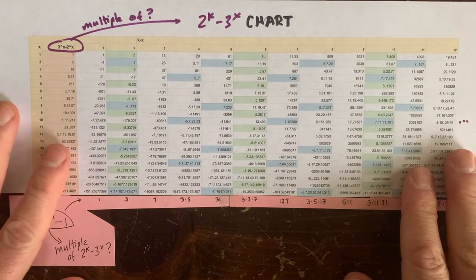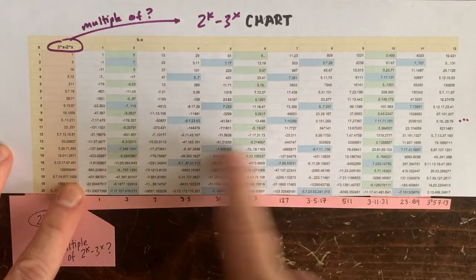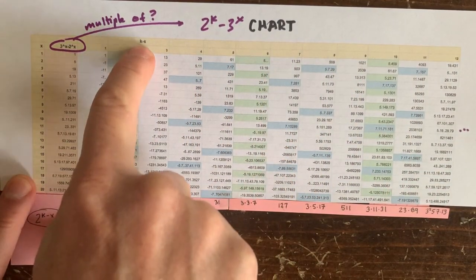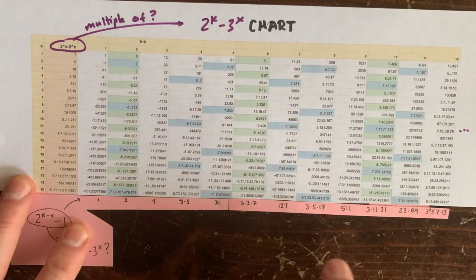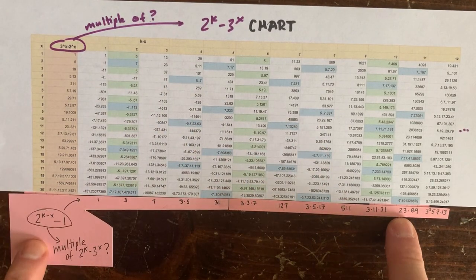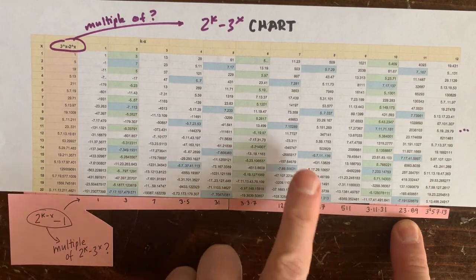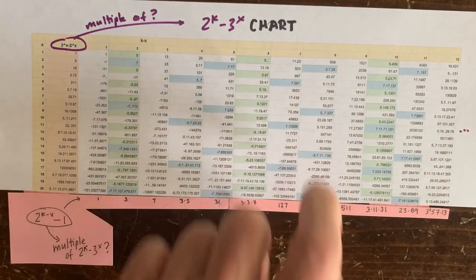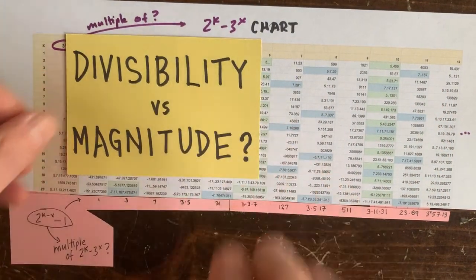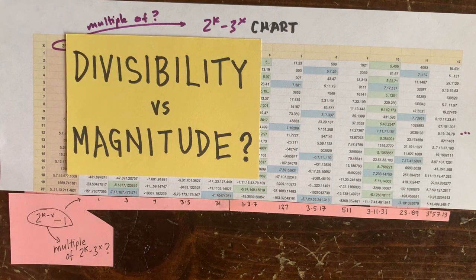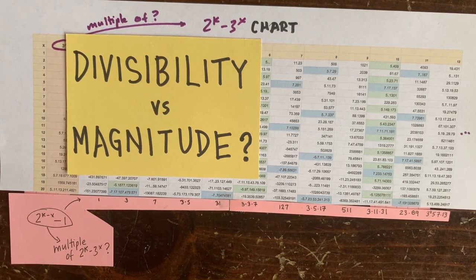So if we bring back our numerology chart, where we've got a cell for every 2^k - 3^x and a column for every value of k minus x, we can ask, like, is 23 times 89 a multiple of anything in this infinite column. Now we're back to talking about integers and prime factors and divisibility. So let's follow up on that next time. See you then.